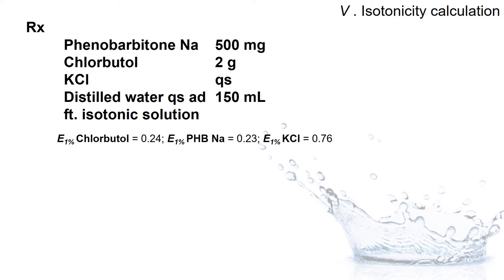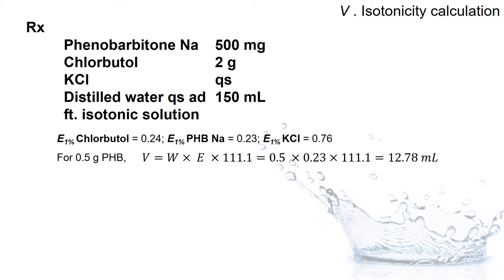Taking the same example as in the sodium chloride equivalent method, we have two ingredients — phenobarbitone sodium and chlorobutanol — and we need to use potassium chloride to adjust the isotonicity. For phenobarbitone sodium, the formulation contains 0.5 grams. Using the White-Winson equation by substituting the amount and the E1% value, we end up getting 12.78 mL, meaning about 30 mL is needed to make 0.5 grams of phenobarbitone sodium isotonic.